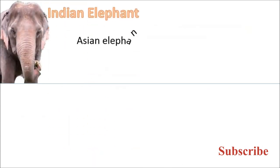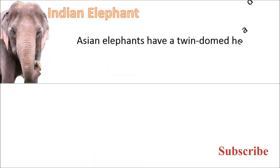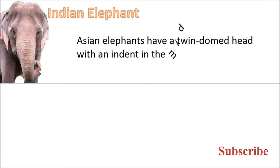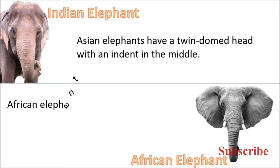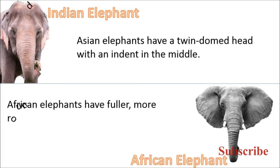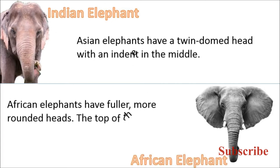Asian elephants have a twin domed head with an indent in the middle. African elephants have a fuller, more rounded head. The top of the head is a single dome — there is no indent.